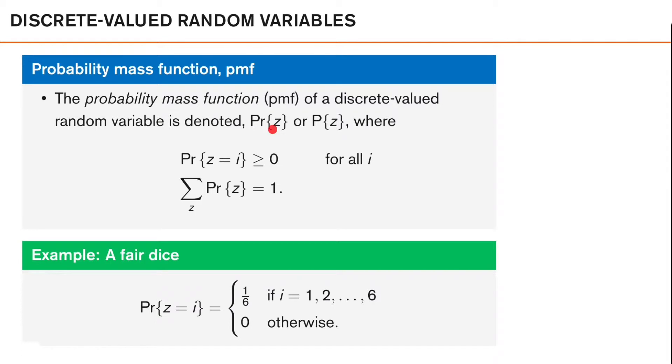Now, our probability mass function needs to have the following properties in order to be a proper probability mass function. First, the probability that our discrete-valued random variable z is equal to some integer value i, which is written like this, needs to be greater than or equal to zero.